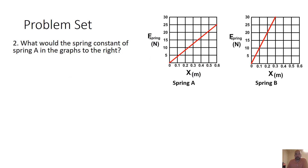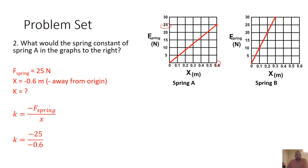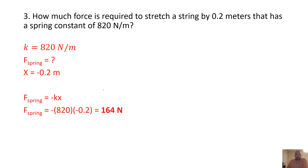What is the spring constant for spring A and B? Taking the values — 25 newtons and 0.6 meters — and solving for K gives a spring constant of 41.67 N/m. Next: how much force is required to stretch a spring by 0.2 meters with a spring constant of 820 N/m? With displacement of negative 0.2 m and K = 820 N/m, plugging into Hooke's Law gives 164 newtons of force.